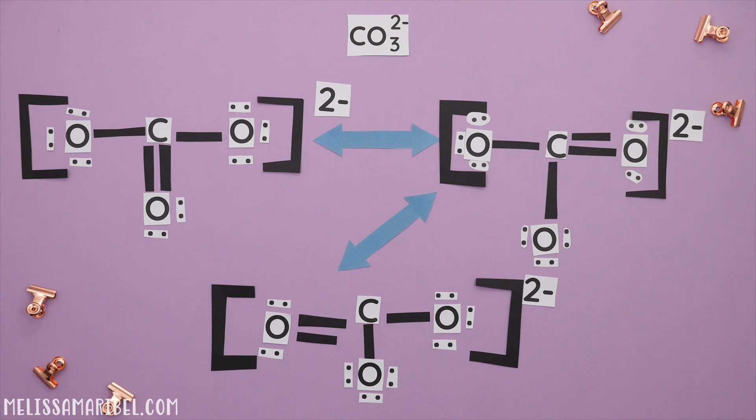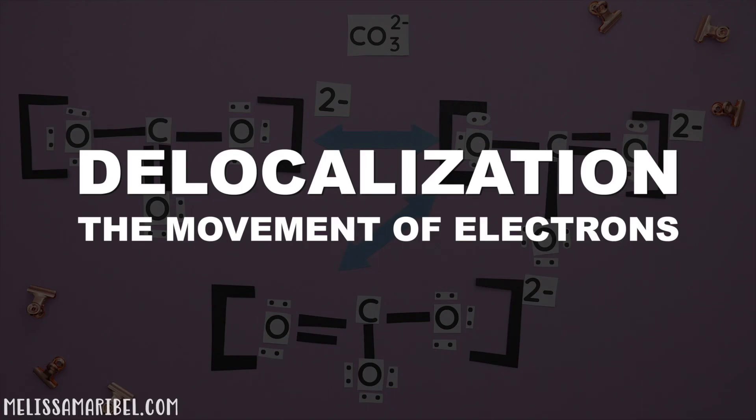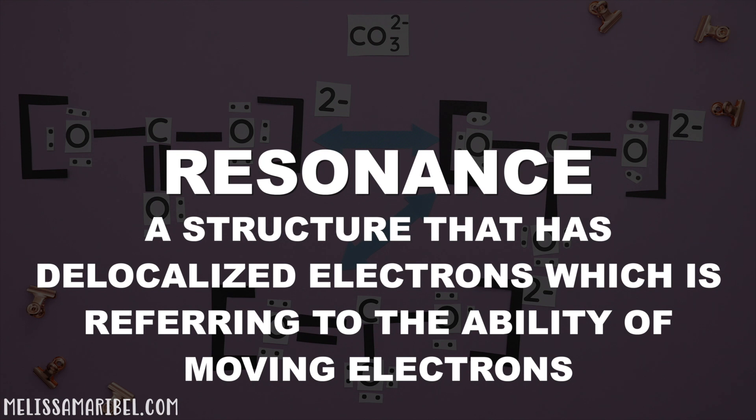This movement of electrons that we just saw is called delocalization. In organic chemistry, we're going to get a bit deeper into the concept of resonance. It is going to be described as a structure that has delocalized electrons, which is referring to the ability of moving electrons.